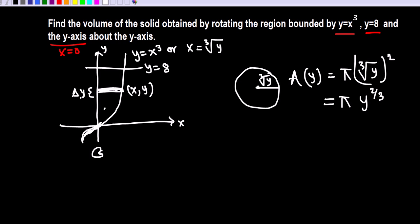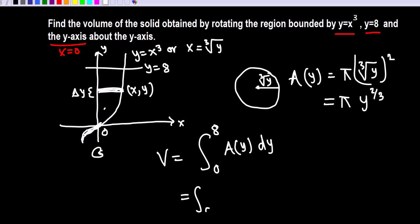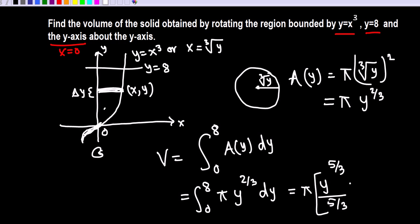The volume is given by the integral of the area A(y) dy. This slice can be taken anywhere from 0 to 8, so we integrate from 0 to 8: pi times y to the two-thirds dy. Pi is constant and can be pulled outside. Using the power rule, the antiderivative of y to the two-thirds becomes y to the five-thirds divided by five-thirds, evaluated from 0 to 8.